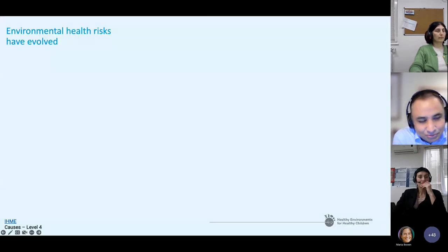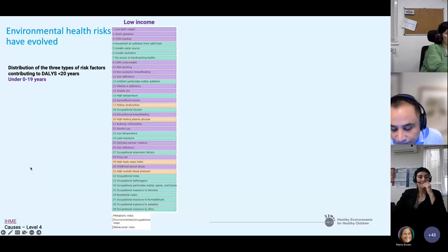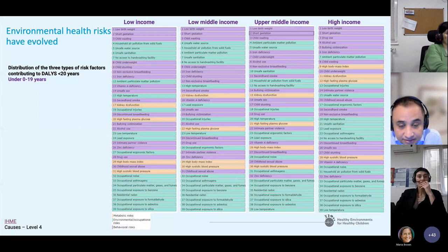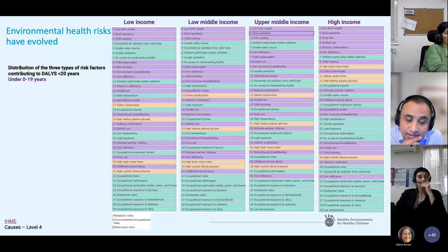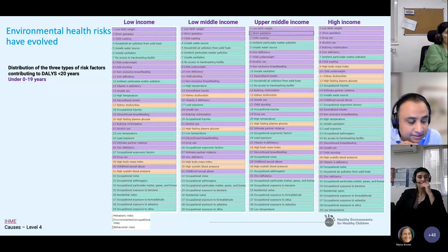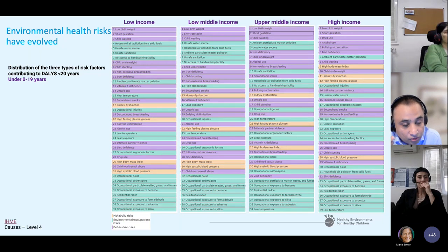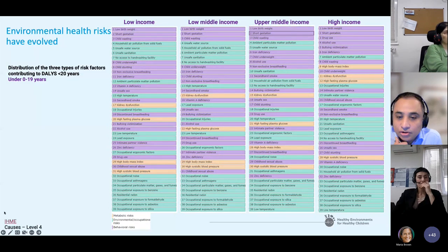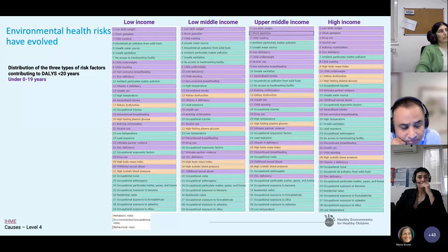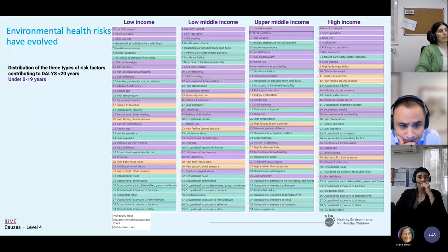If you look at the burden of disease in children ages zero to 19, broken down by low income, lower-middle income, upper-middle income, and high income country contexts, you have to go a step below to see what risk factors contribute. The risks are classified in three categories: metabolic risks shown in orange, environmental risks in green, and behavioral risks. We work on several of these across many countries.